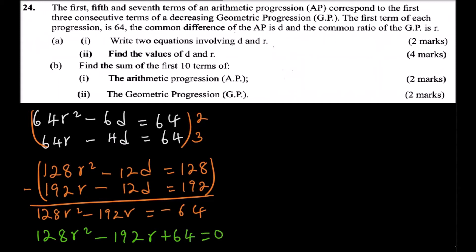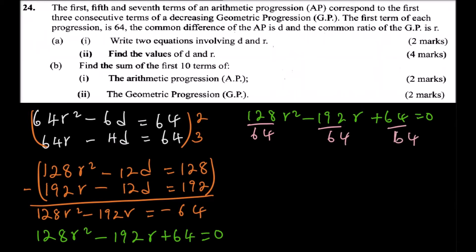Dividing through by 64, this quadratic equation simplifies to 2r² minus 3r plus 1 equals zero. We need two numbers that multiply to 2 and add to minus 3.